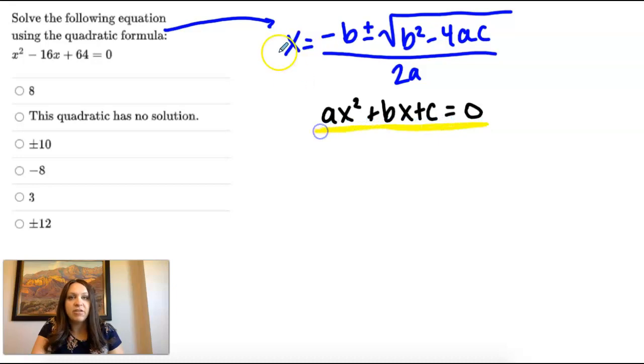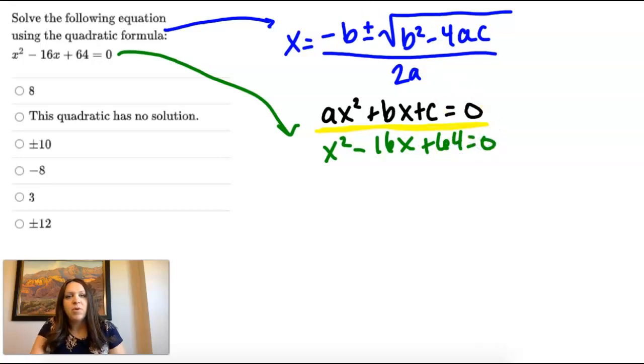And we take a quadratic that we're looking at, so x squared minus 16x plus 64 equals zero. And we're going to pull a, b, and c out of that.